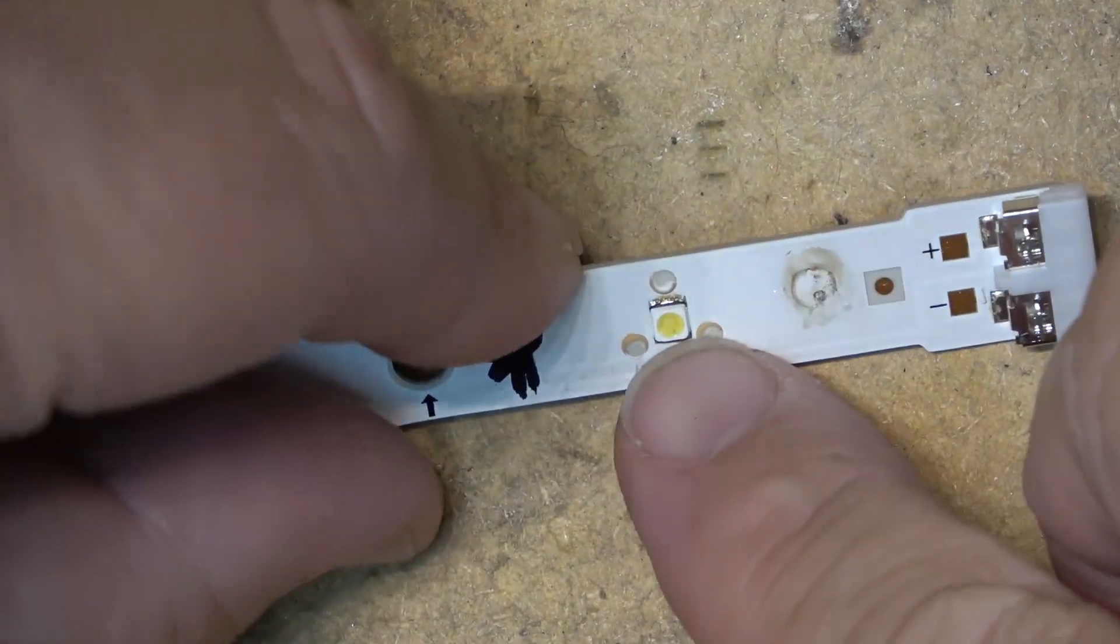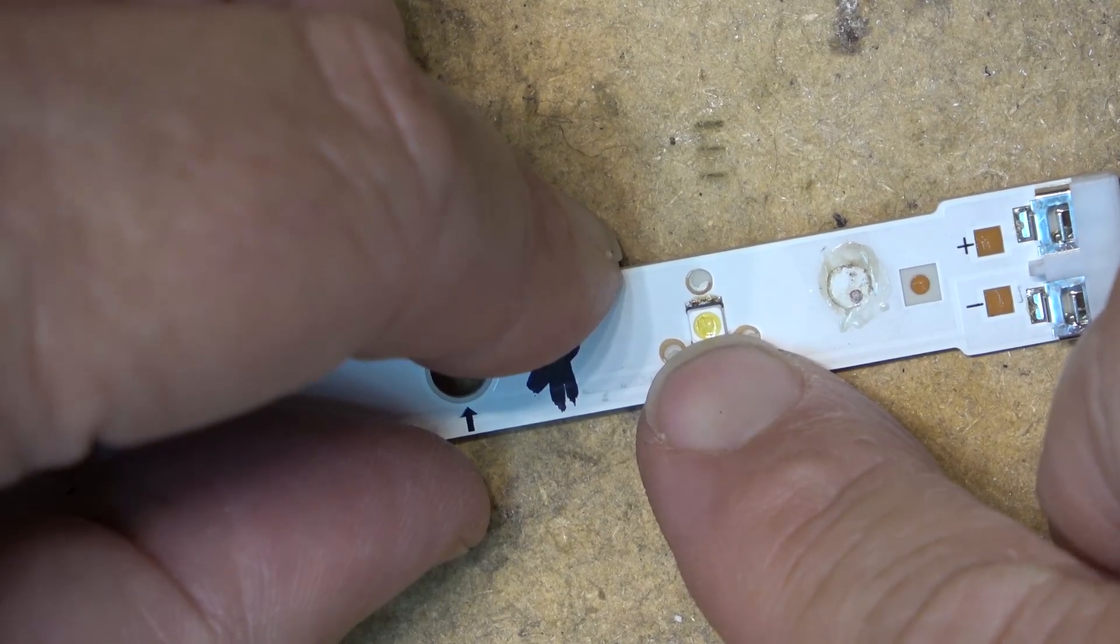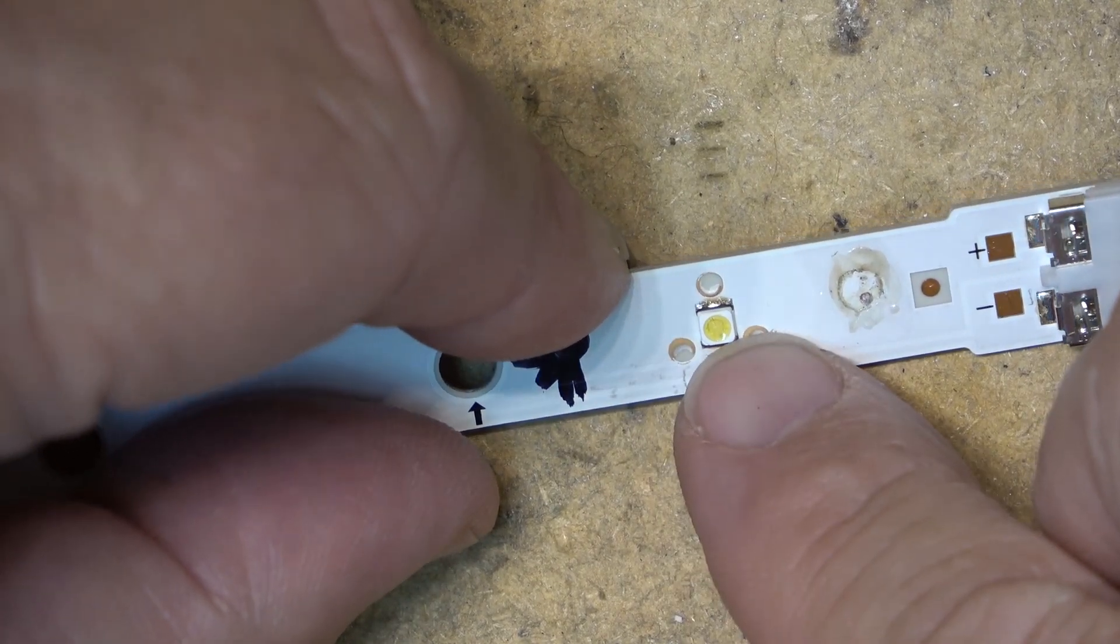Here's a look at one of the bad ones here from the other strip. You can see a little black dot there where it's shorted.